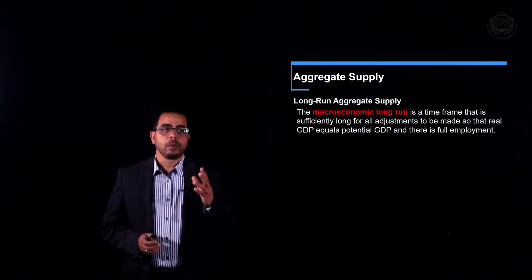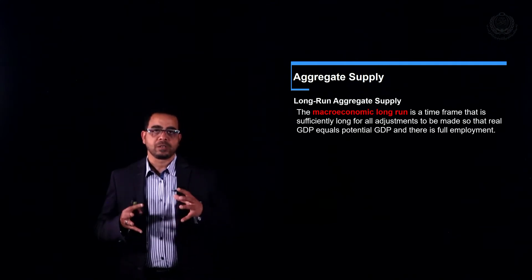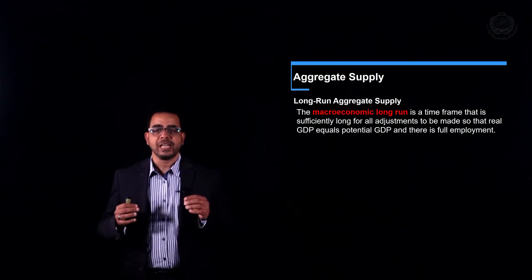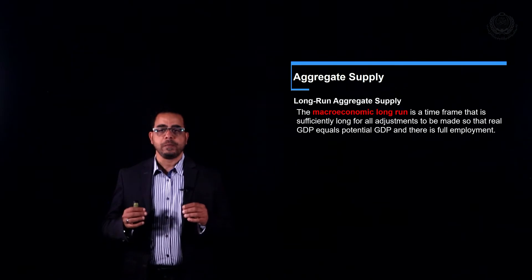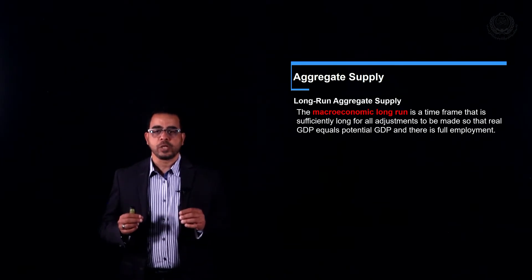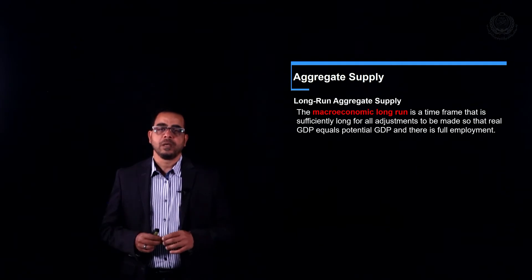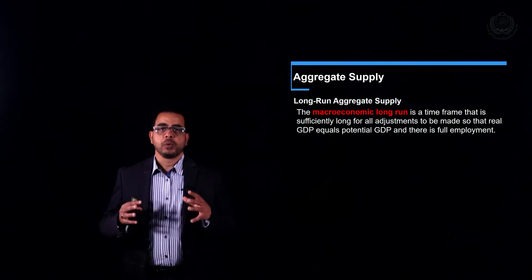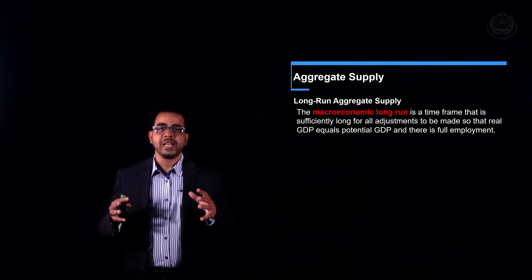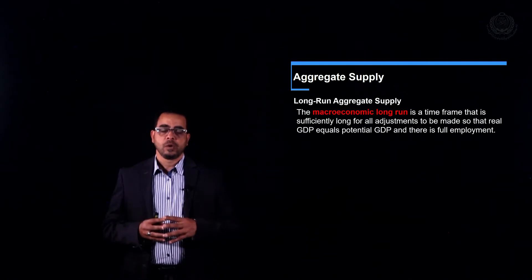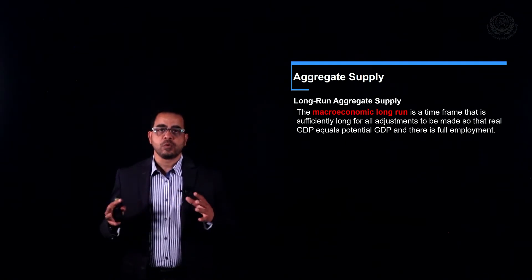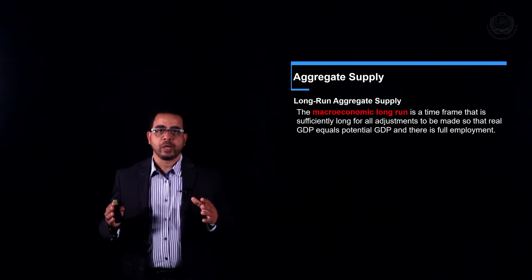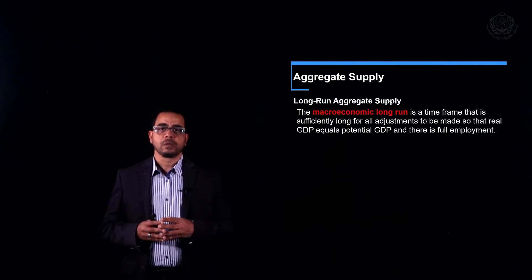The macroeconomic long run is defined as the time frame sufficiently long for all adjustments to be made, so real GDP equals potential GDP and we are at full employment. Potential GDP is the level of GDP large enough for everyone to be employed — where there is zero cyclical unemployment and only the natural rate of unemployment exists.